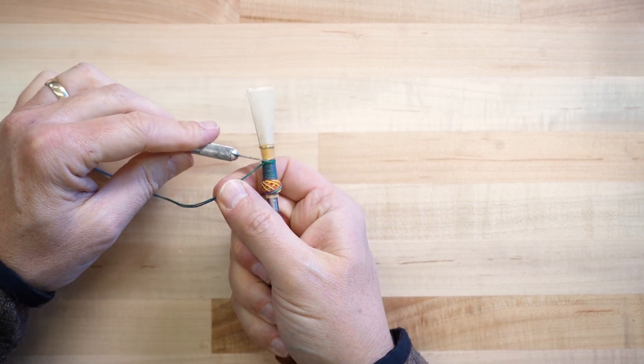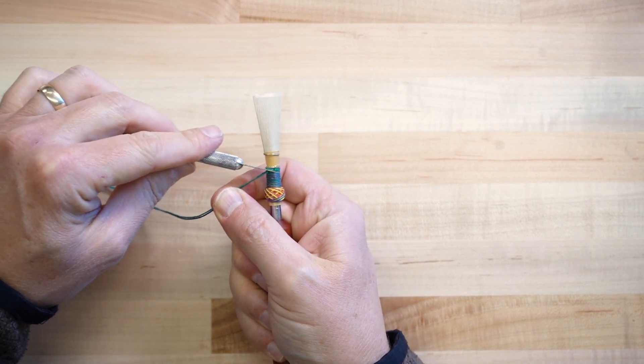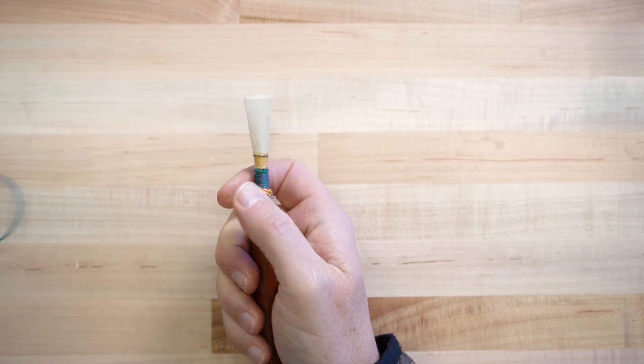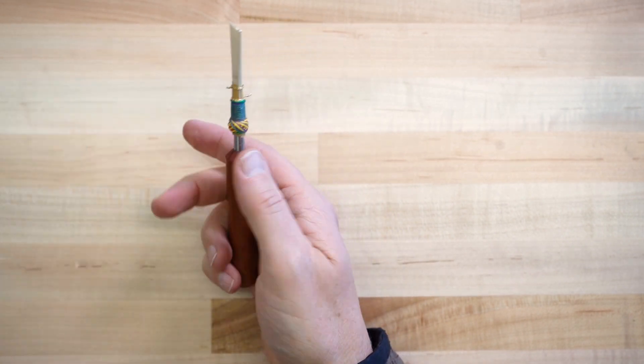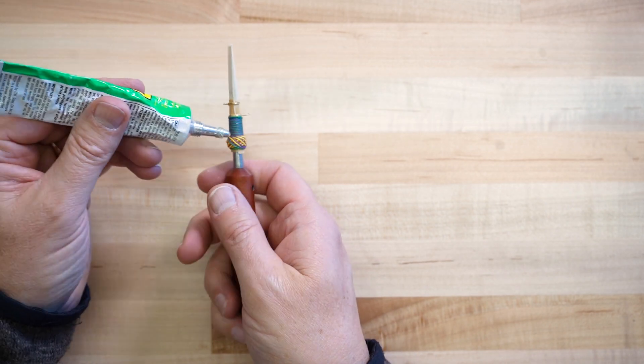Cut off the excess string. Apply Duco Cement to the entire string area.